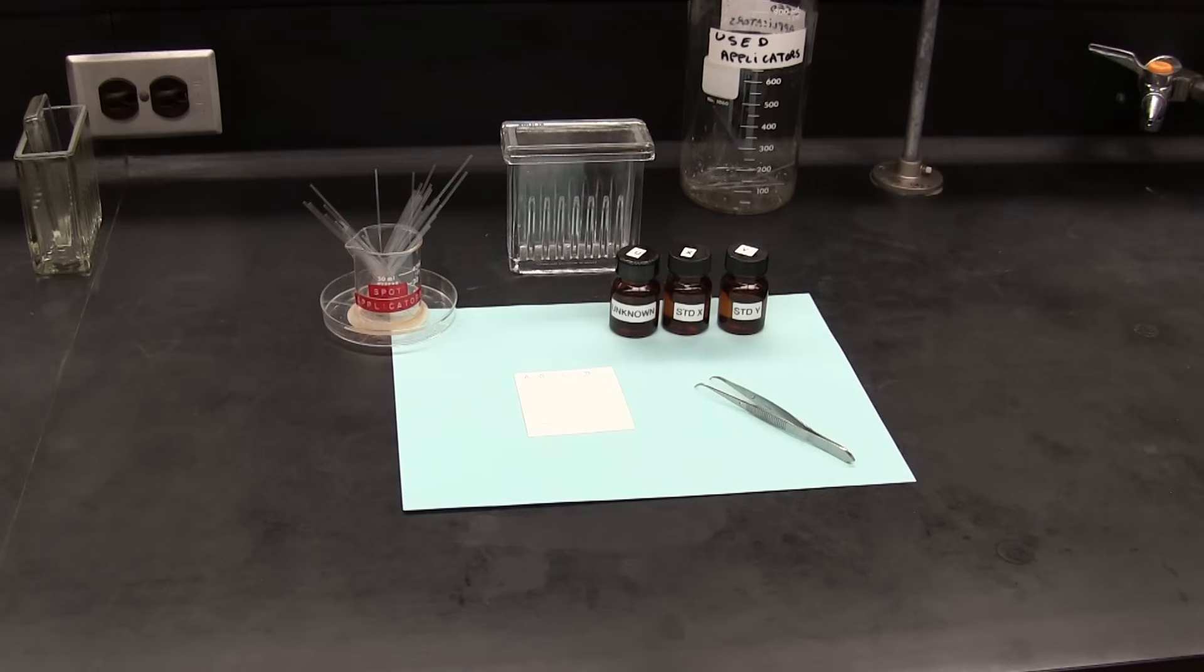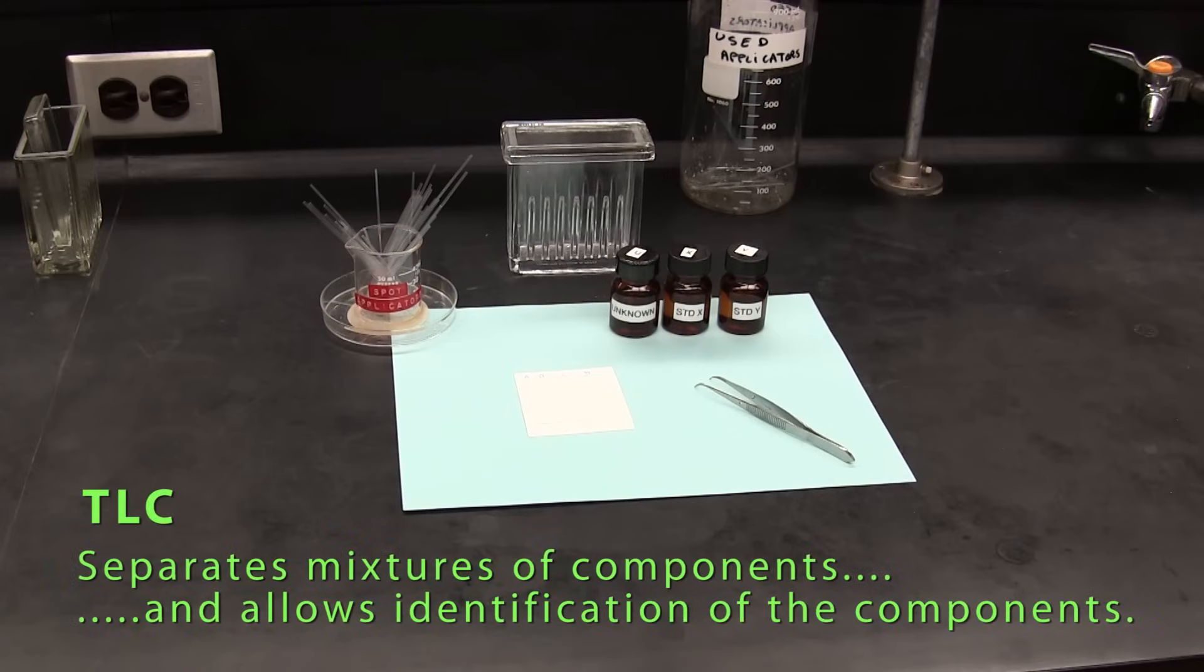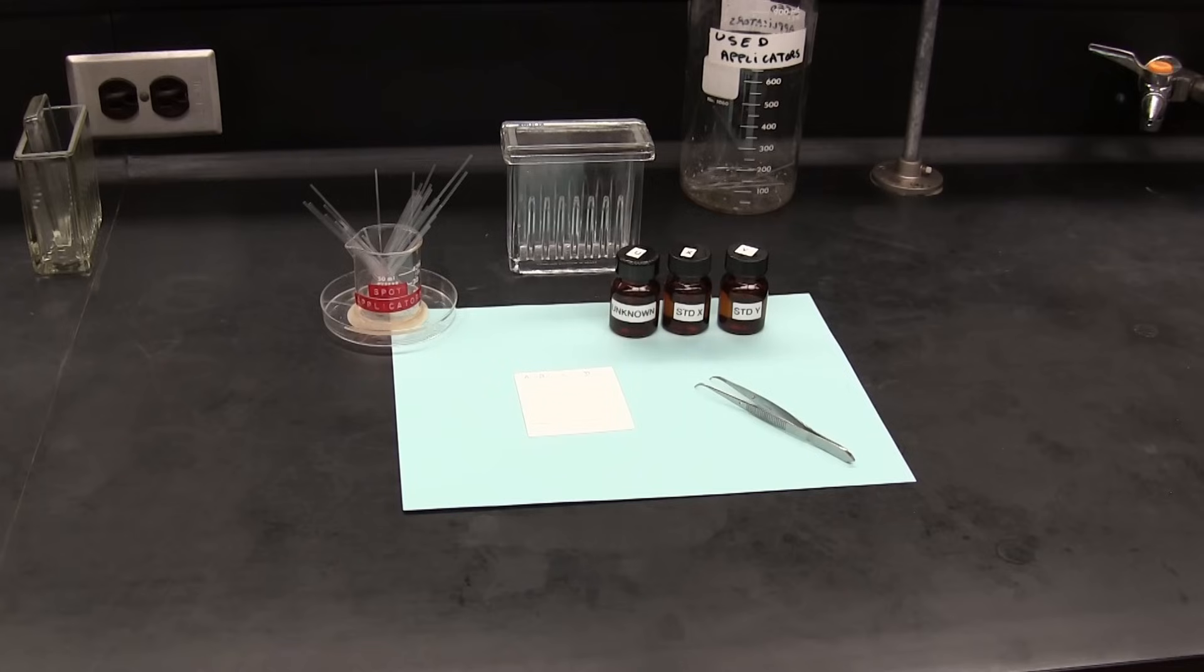Thin layer chromatography, TLC, is a method used for rapid qualitative analysis where components in a mixture can be separated and identified. This video is focused on the general method or procedures used in TLC. For information on the theory, you can check out your lab manual or lab guide.